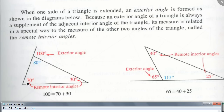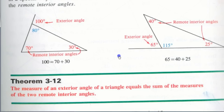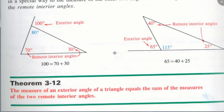Guess what — that's a theorem. Write it down. The measure of an exterior angle of a triangle equals the sum of the measures of the two remote interior angles — not the one next to it.